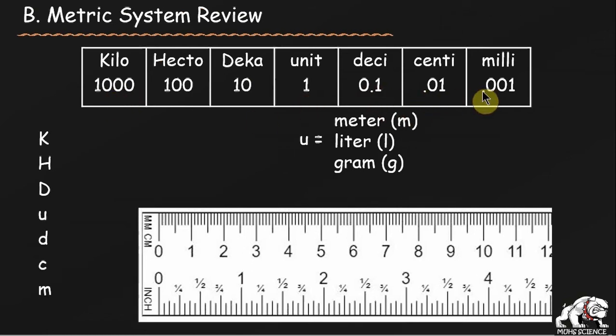Whereas deci, centi, and milli are all fractions of that. A decimeter means you have one tenth of that base unit, so a decimeter is 0.1 meters. A centimeter is 0.01 meters, and a millimeter is 0.001.